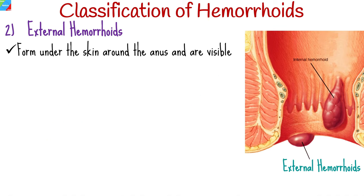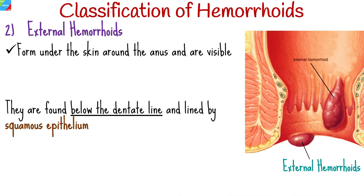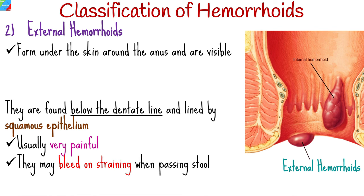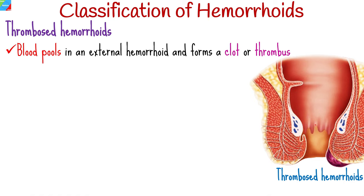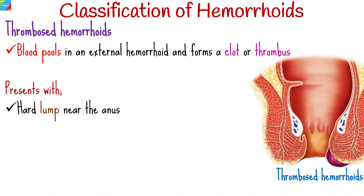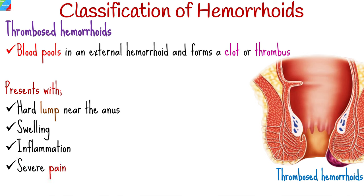The second type is external hemorrhoids, which form under the skin around the anus and are therefore visible. They are found below the dentate line and lined by squamous epithelium. They are usually very painful because this area has more sensitive nerves, and may bleed if you strain when passing a stool. Sometimes blood pools in an external hemorrhoid and forms a clot or thrombus, giving rise to thrombosed hemorrhoids, which present with a hard lump near the anus, swelling, inflammation, and severe pain.